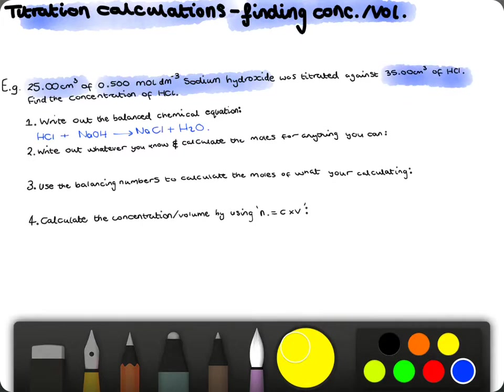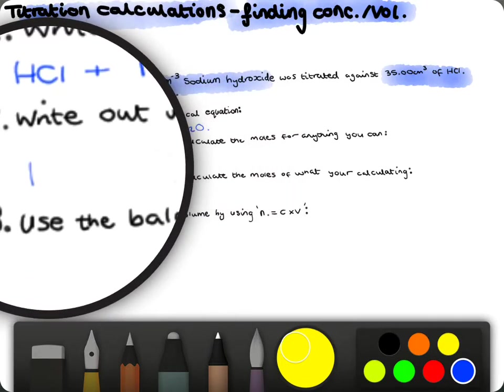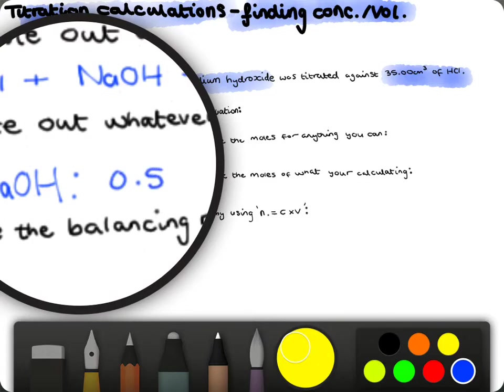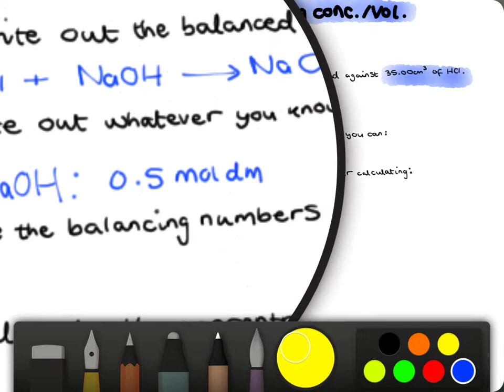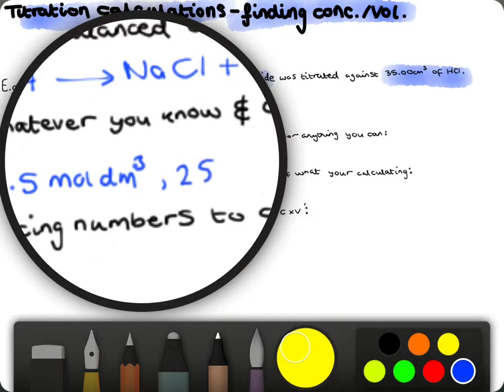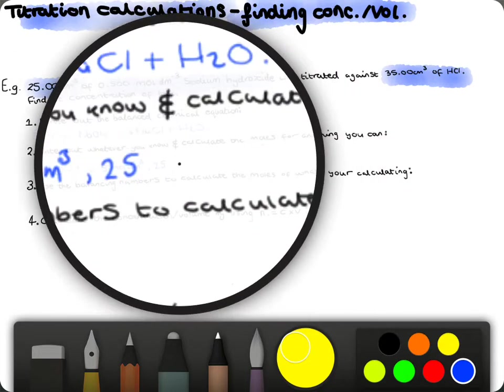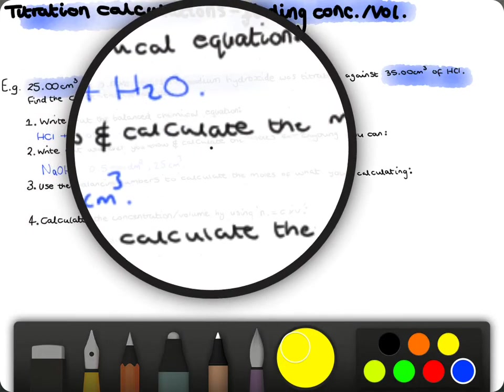So, using the first piece of information we had, for the sodium hydroxide, we have 0.5 moles per decimetre cubed, and we have 25 cm³ of volume. So, using this data, we can calculate our moles for sodium hydroxide.